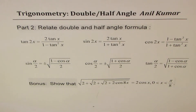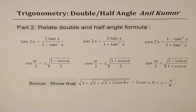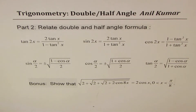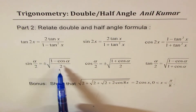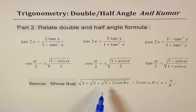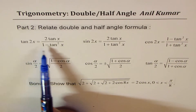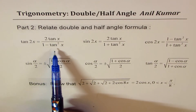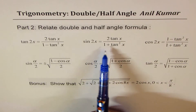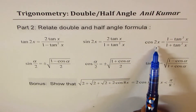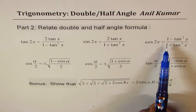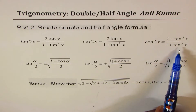I'm Manil Kumar and here is part 2 of trigonometry where we'll discuss double and half angle formulas. We'll relate double and half angle formulas, and here are a few questions we'll attempt: proving tan 2x equals 2 tan x over 1 minus tan squared x, sin 2x equals 2 tan x over 1 plus tan squared x, and cos 2x equals 1 minus tan squared x over 1 plus tan squared x.